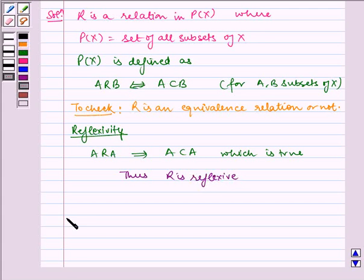Now let us check for transitivity. A R B implies A is contained in B. B R C implies B is contained in C.